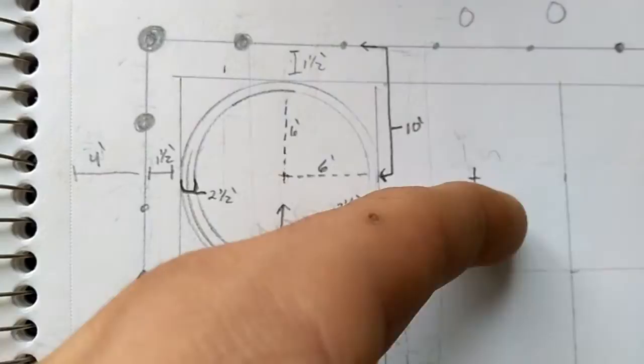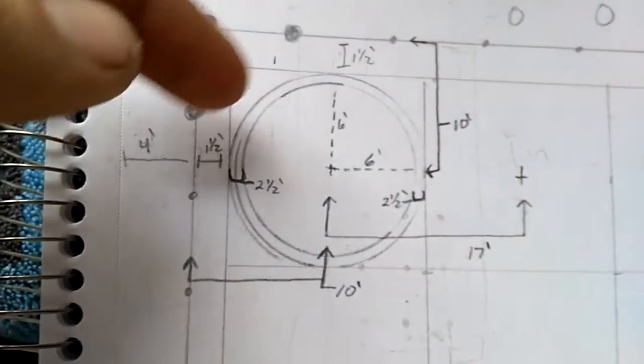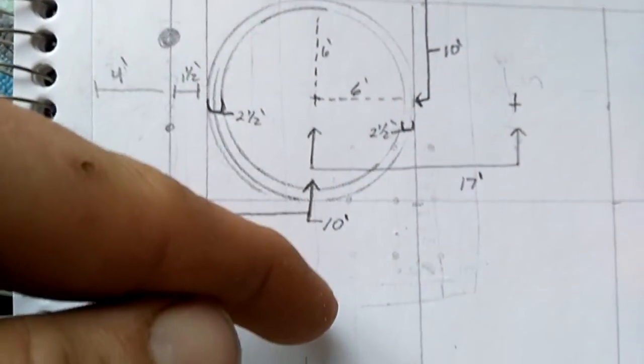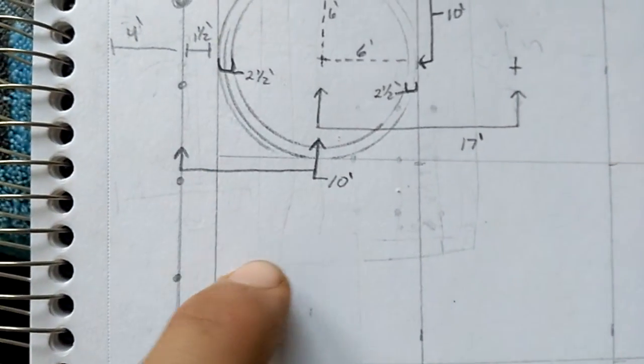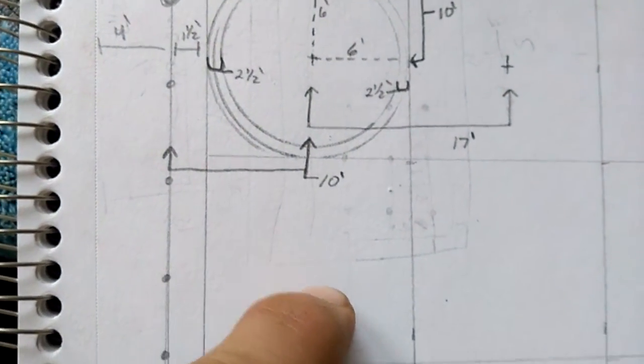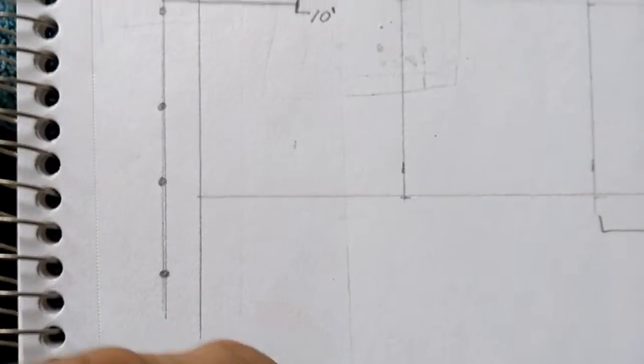Keep doing this going that way and continue doing it this way. Go 17 foot by 10 foot, set your second anchor, third anchor, and so on and so forth.